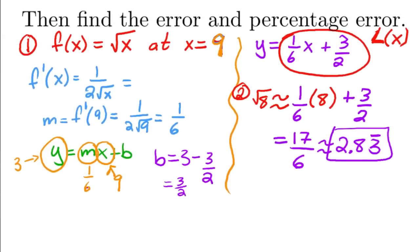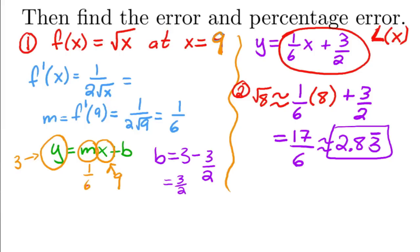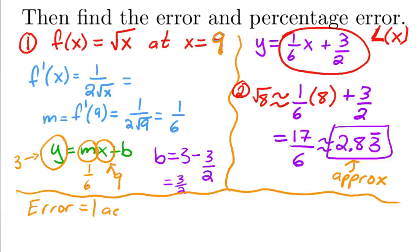So, let me close this off here. So, this value right here. This is our approximated value. And then, to find the error, which is actual minus the approximated.